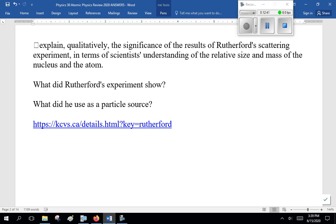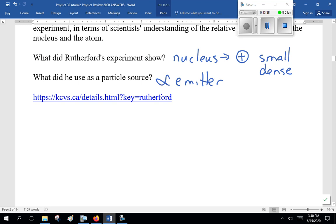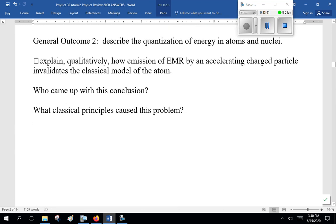Explain quantitatively the significance of the results of Rutherford's scattering experiment in terms of scientists' understanding of the relative size and mass of the nucleus in the atom. What do Rutherford's experiments show? Nucleus. Positive. Small, dense. Very small. If the atom is the size of the gym, the nucleus is the size of a mosquito. What did he use as a particle source? Alpha emitter. KCVS, there's a simulation for Rutherford there.